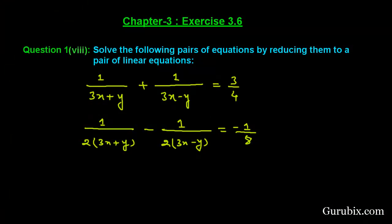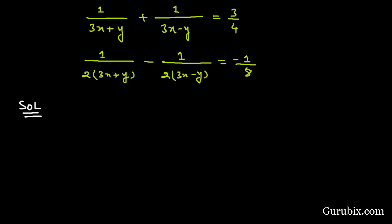Welcome friends, let us solve the 8th part of question number 1 of exercise 3.6 of chapter 3. The question says: solve the following pair of equations by reducing them to a pair of linear equations. We have two equations, so first we have to reduce them into a pair of linear equations and then sort them.